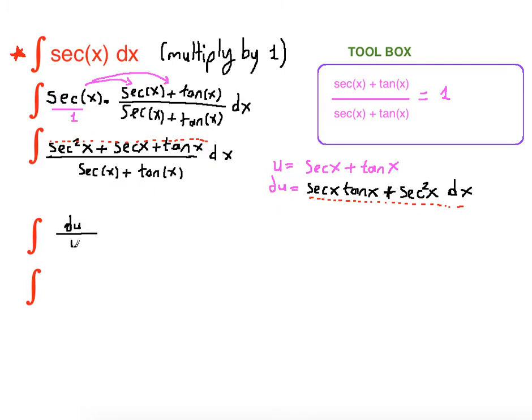So it's going to be 1 over u du. So what is the antiderivative of 1 over u? It is ln absolute value of u plus c.